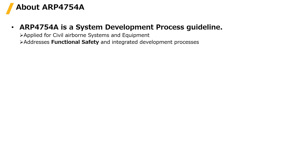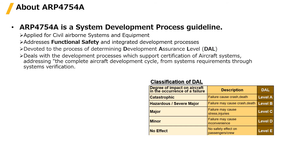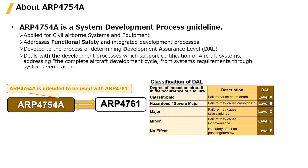Another essential guideline is ARP 4754A. 4754A also targets civil airborne systems and equipment, the same as 4761. 4754A provides guidelines for the development process of airborne systems. The 'A' at the end refers to the revision, not the name of the standard itself. 4754A addresses functional safety and design assurance processes, and is dedicated to determining the Development Assurance Level (DAL), which determines logical or complex hardware and software development and verification activities. 4754A is designed to be used in conjunction with 4761.